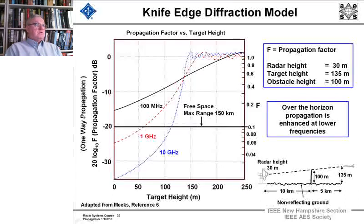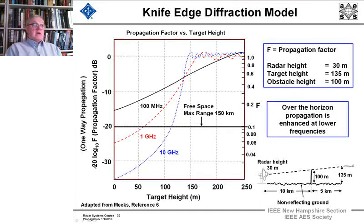What we're going to do is we're going to plot the propagation factor, that's how diffraction affects things, as a function of the target height. Now here we have the target on a plane at 135 meters height. The distance we're talking about is a total of 15 kilometers, 10 kilometers to this obstacle, which is 100 meters high. The radar is 30 meters high.